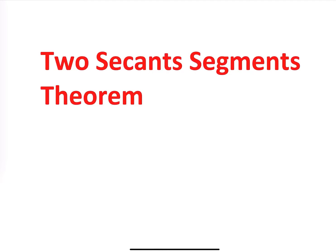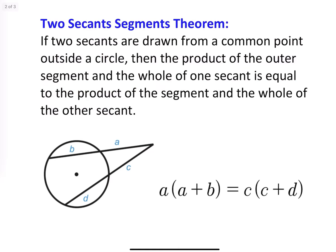Hey everyone, Teacher Chang here, and today we're going to take a look at the two secant segment theorem. The two secant segment theorem states: if two secants are drawn from a common point outside a circle, then the product of the outer segment and the whole of one secant is equal to the product of the outer segment and the whole of the other secant.